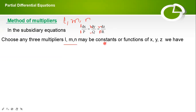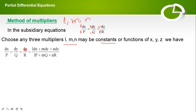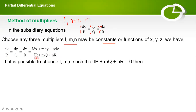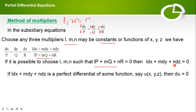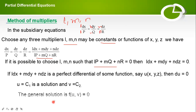We choose l, m, n — either constants or functions of x, y, z — such that dx/P = dy/Q = dz/R = (l·dx + m·dy + n·dz) / (l·P + m·Q + n·R). If this denominator equals zero, then l·dx + m·dy + n·dz = 0 is the solution. Similarly, find one more solution, and the final solution is f(u, v) = 0.